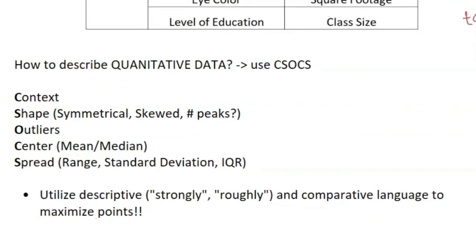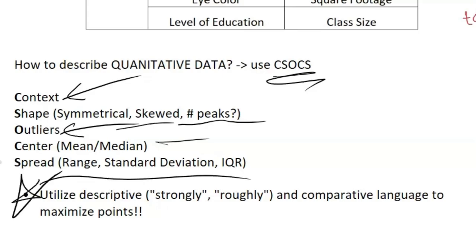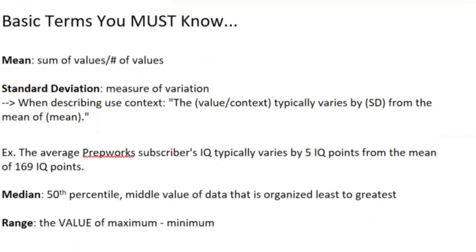Now let's go on to quantitative data. For quantitative data, you want to know how to describe it. A big part of AP STAT is just interpreting because a lot of the calculations are straightforward - you have a reference table, you can use your calculator. But you need to know how to interpret. For quantitative data, use the acronym CSOX. C stands for context, S stands for shape - is it symmetrical, is it skewed, number of peaks, is it unimodal, bimodal. Look at the outliers - any data points that are super out wide compared to the rest of the data. You have your center - look at your mean or your median. You have spread - that's range, your standard deviation, your IQR. Here's a little tip: utilize descriptive language, like strongly, roughly, like roughly symmetrical. Also use comparative language to maximize the number of points you can get on the exam.